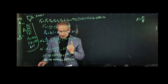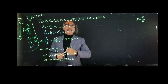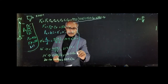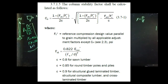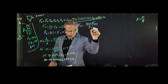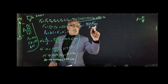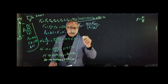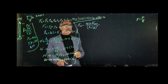Next we calculate the critical buckling design value. Because of buckling, we can no longer use the simple stress equation and instead use the Euler-based equation from NDS section 3.7. The critical buckling design value is Fce = 0.822 × E'min divided by (LE/D) squared.